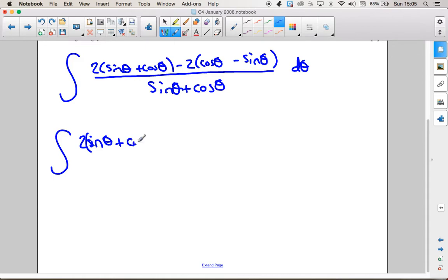2 lots of sin theta plus cos theta over sin theta plus cos theta minus 2 lots of cos theta minus sin theta over sin theta plus cos theta.